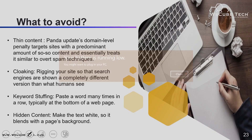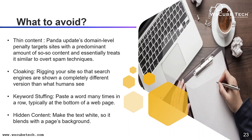Next we have keyword stuffing — pasting a keyword many times in a row, typically at the bottom of the page. If you use a particular keyword again and again in your meta description, title, or content, that is keyword stuffing. You must use your keyword at a proper density — known as keyword density — and that is one to two percent. This means in a 100-word article, use your keyword only one or two times. Next, hidden content — for example, using white-colored text on a white background makes the text invisible. This is known as hidden content, and we must avoid hidden content and hidden text in SEO.